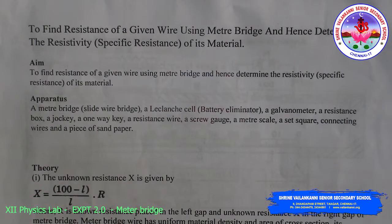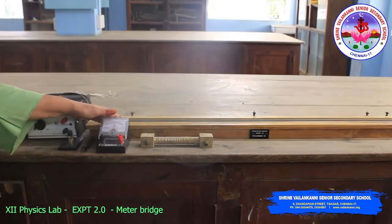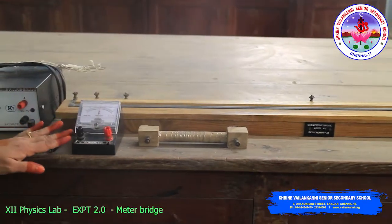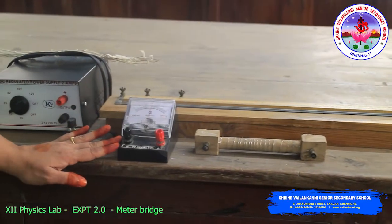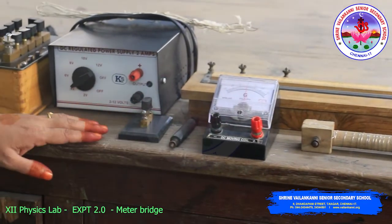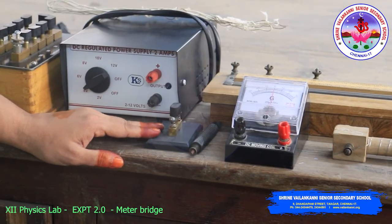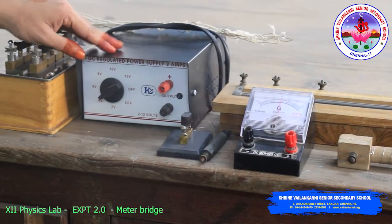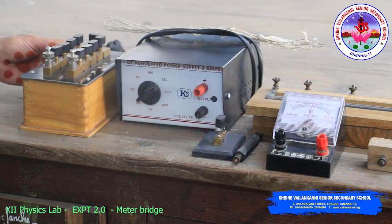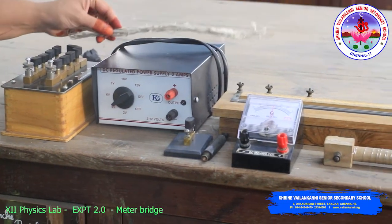Let us see the apparatus: meter bridge, unknown resistance wire, galvanometer, jockey, one-way key, a battery eliminator, resistance box, and some connecting wires.